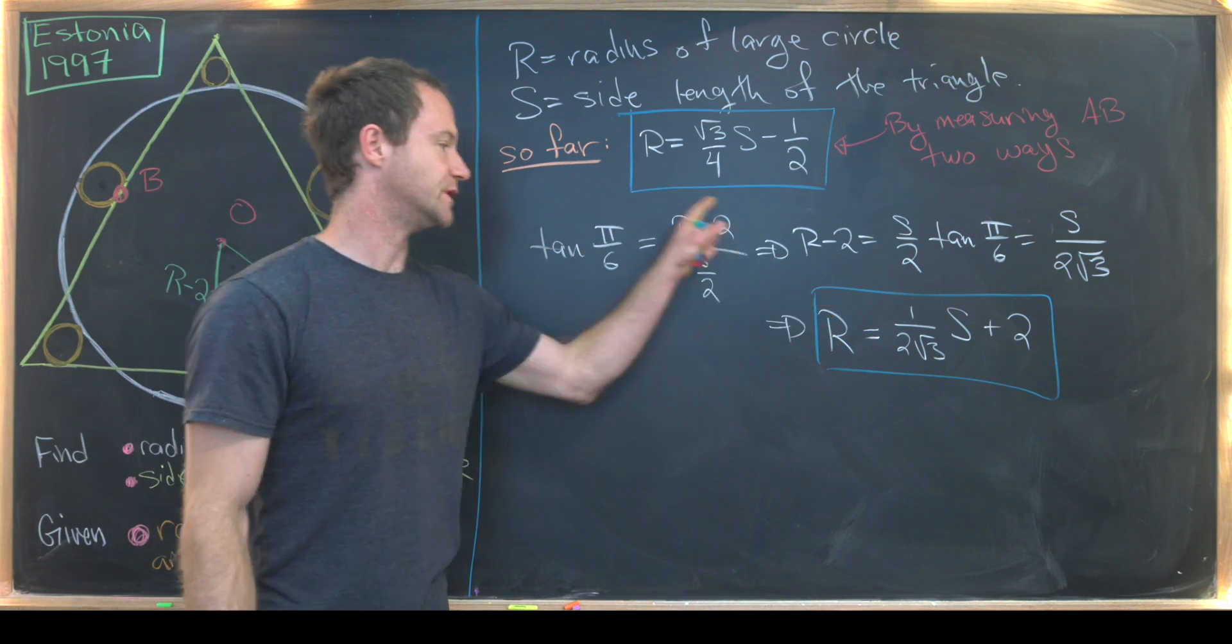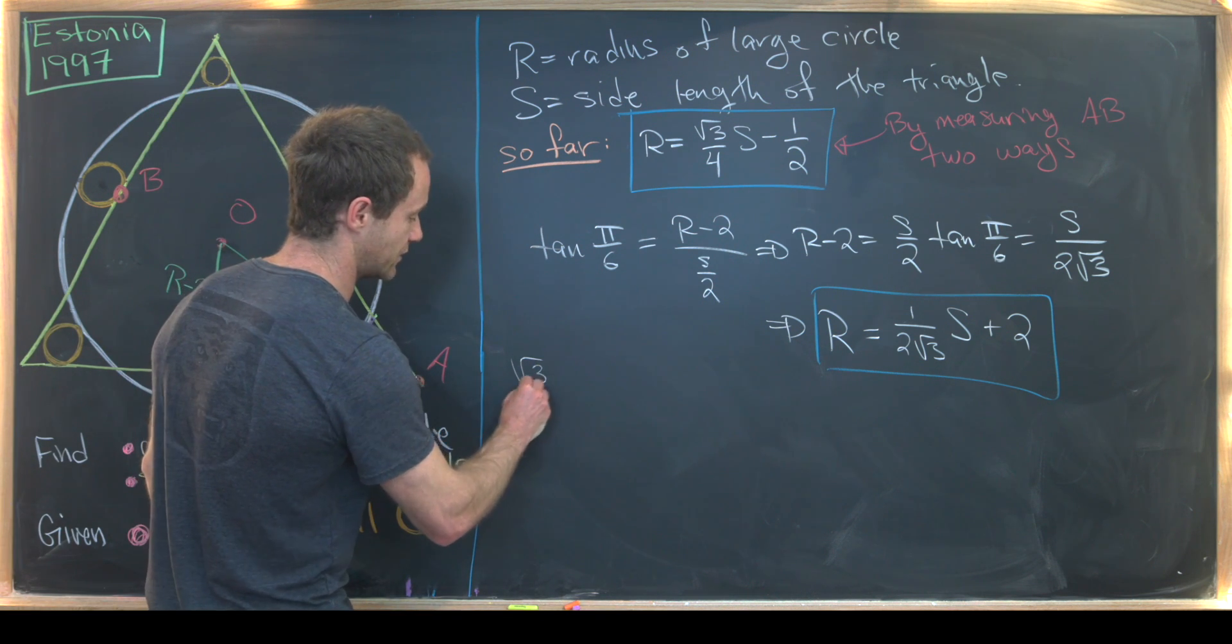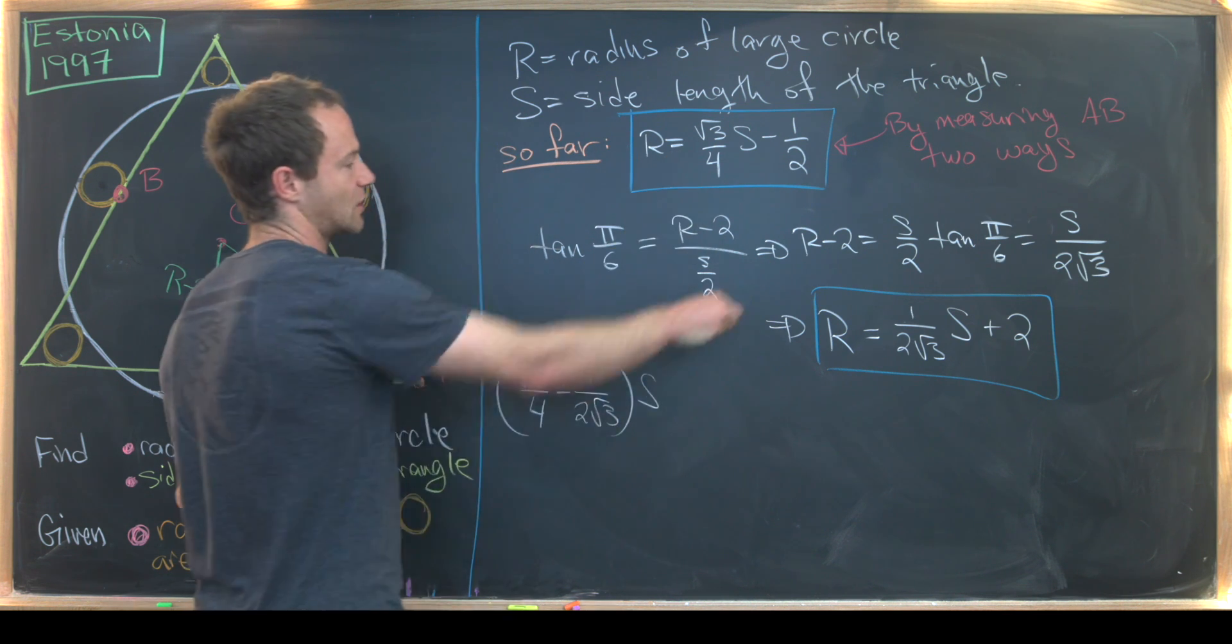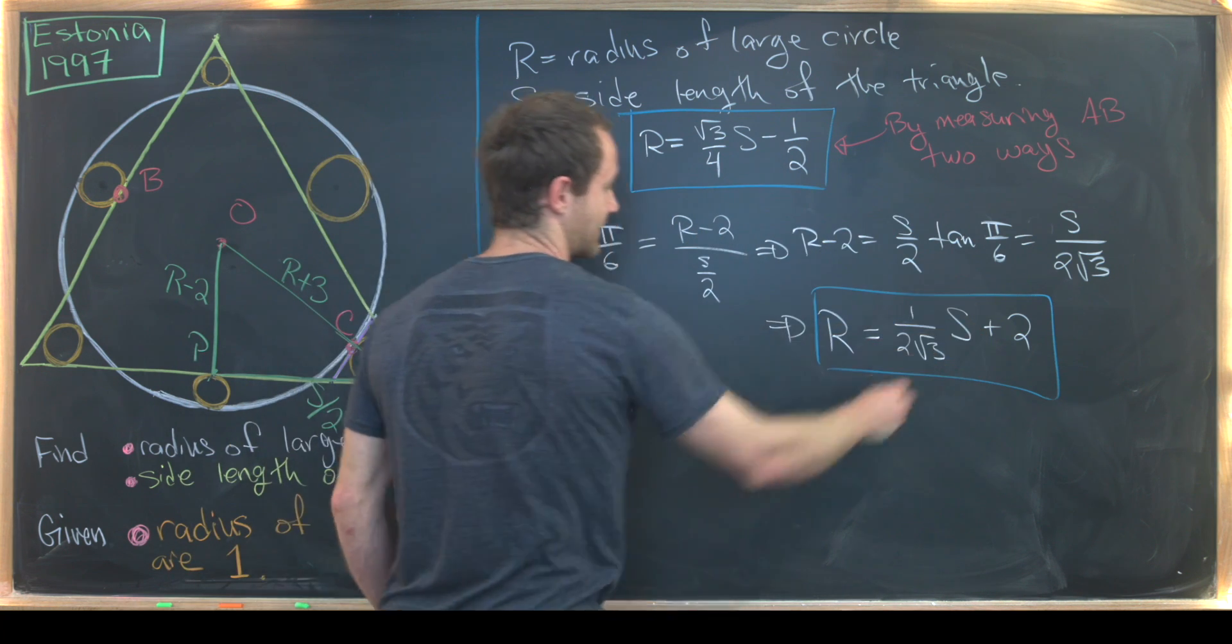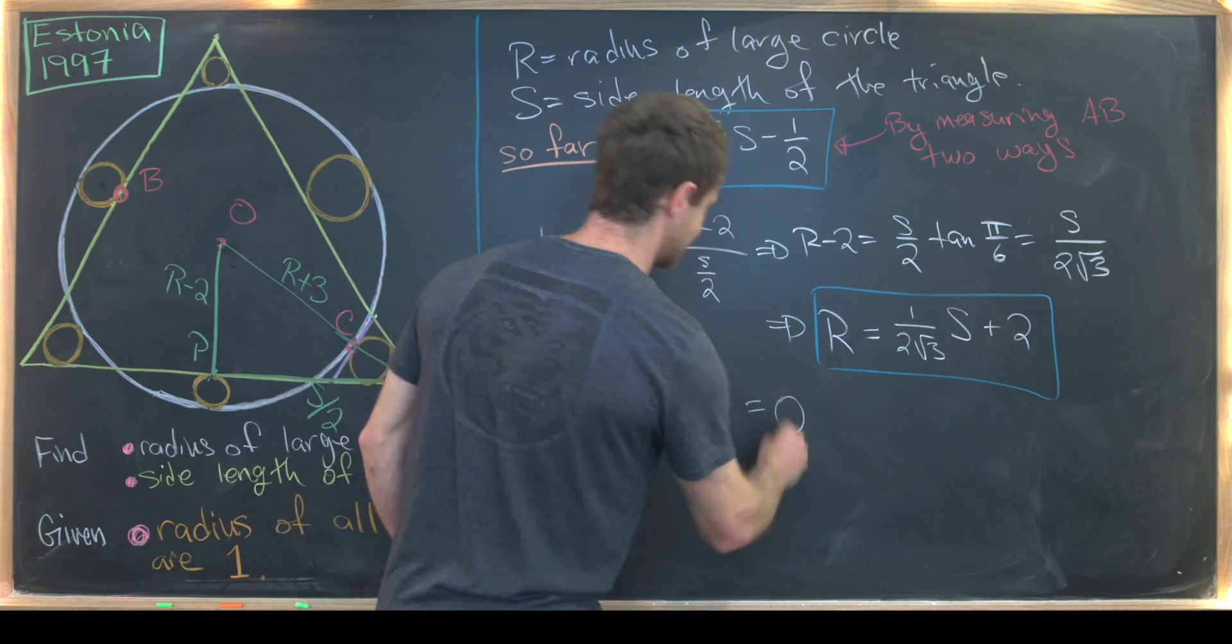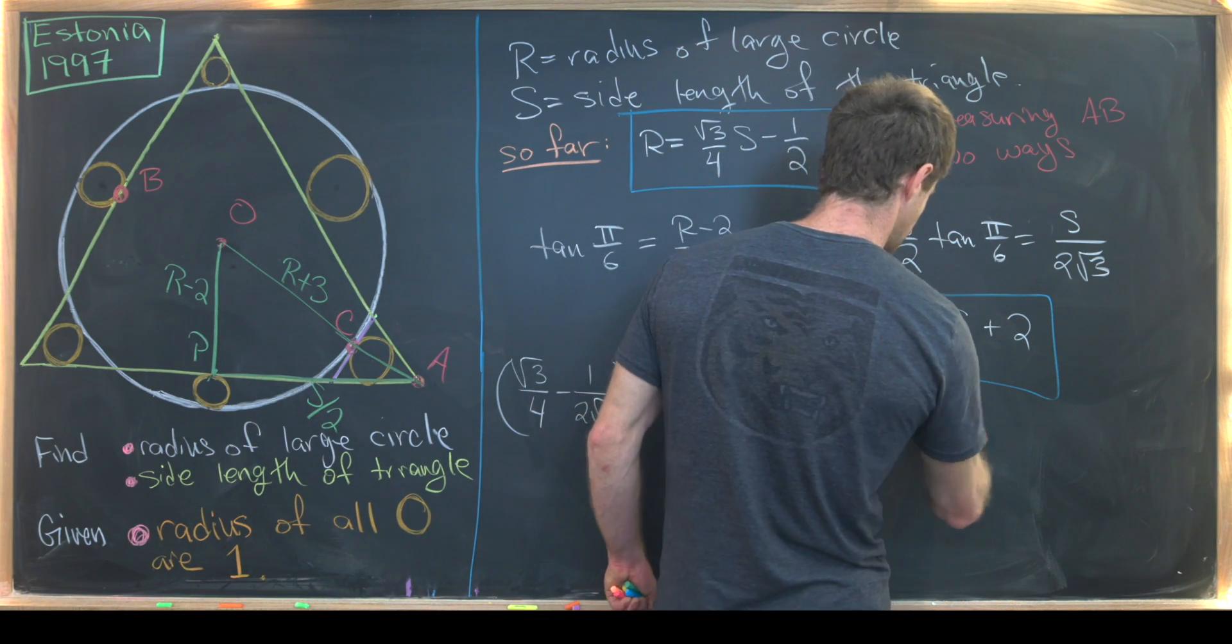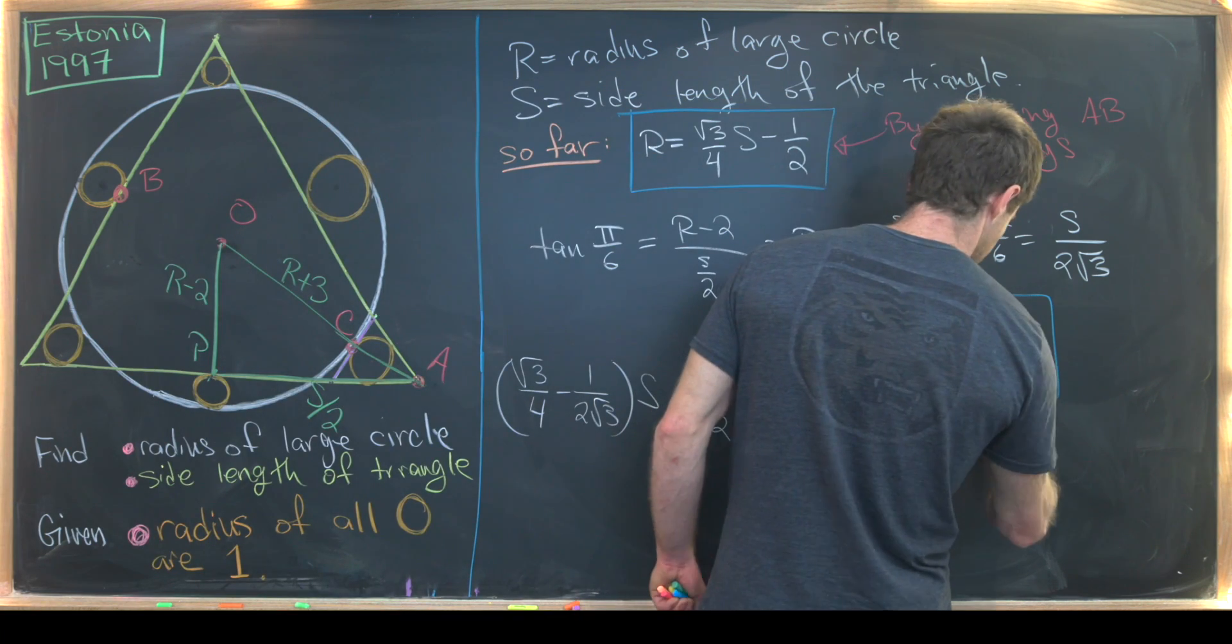But now we can subtract these two equations to get rid of the R. That's going to leave us with root three over four minus one over two root three times S. So I've just combined the S terms, and then I'll have minus half minus two, that's going to be minus five halves equals zero, like that. Now it's not too hard to go from here to the answer, and you'll see that S is equal to 10 times the square root of three. So that's the side length of our large triangle in this case.